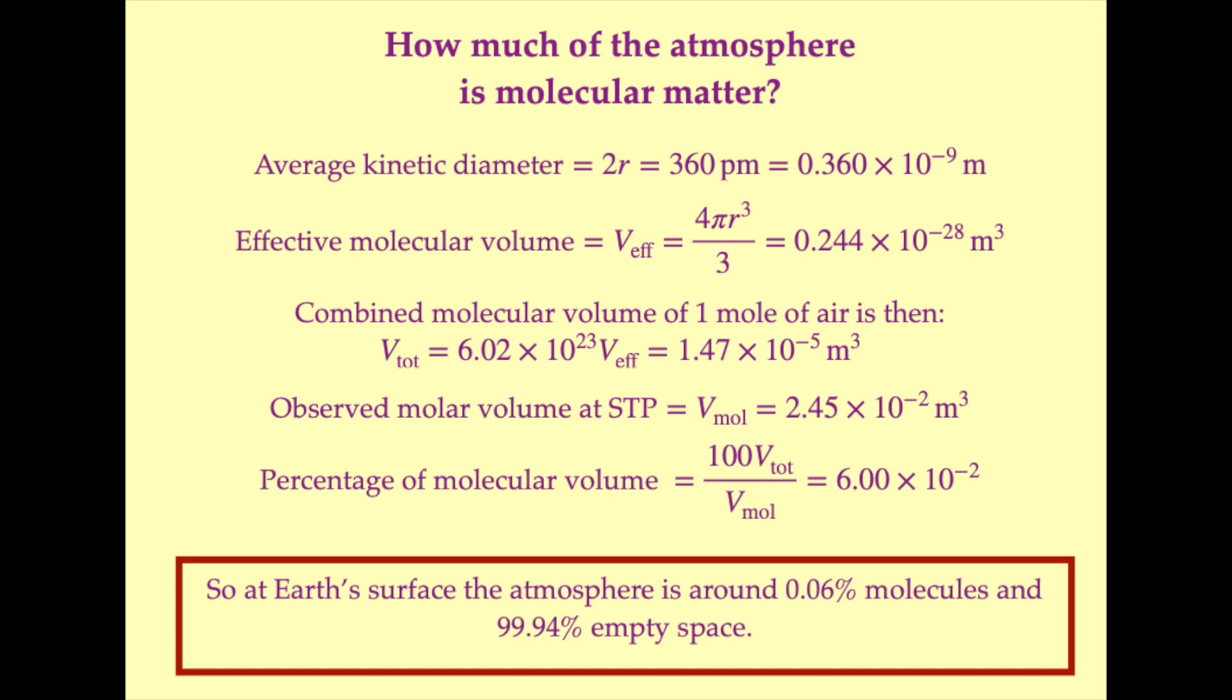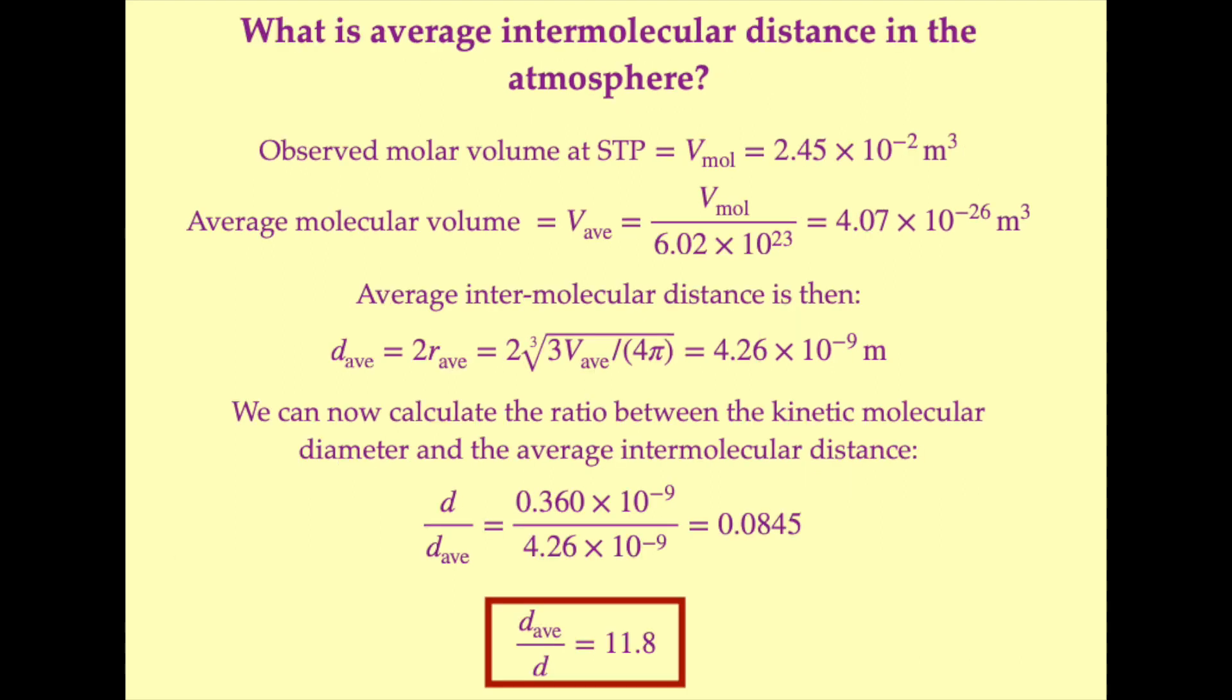Reorganization of these formulas and use of the same observationally derived terms allows us to determine the ratio between mean intermolecular distance and effective kinetic diameter for Earth's near-surface atmosphere. We thus obtain the result that for a nitrogen and oxygen atmosphere under pressure and temperature conditions that apply near Earth's surface, the ratio between the mean intermolecular distance and the effective kinetic diameter is approximately 12.